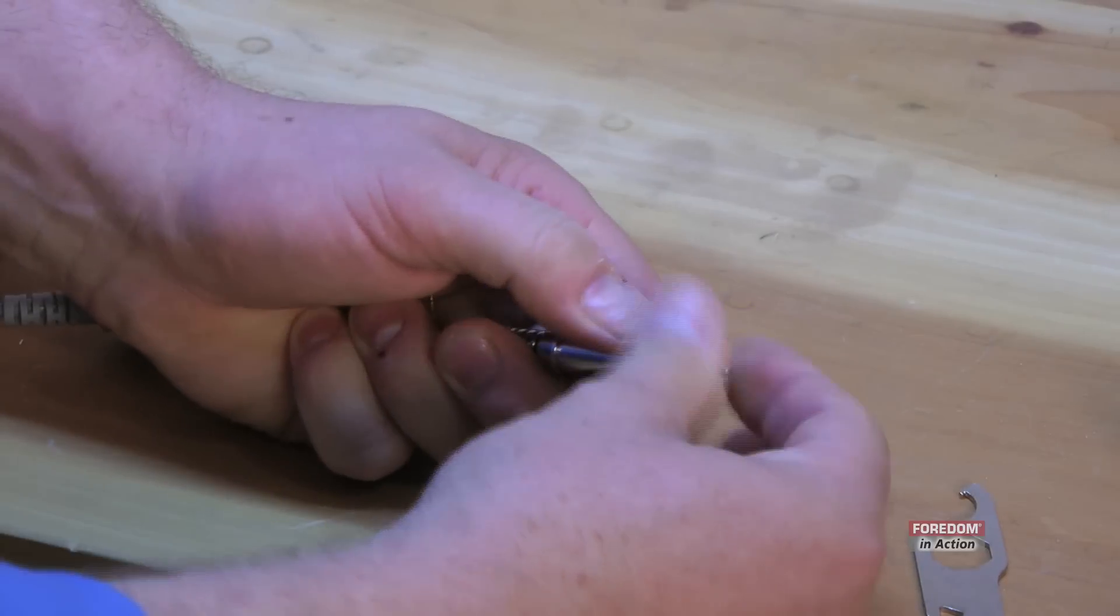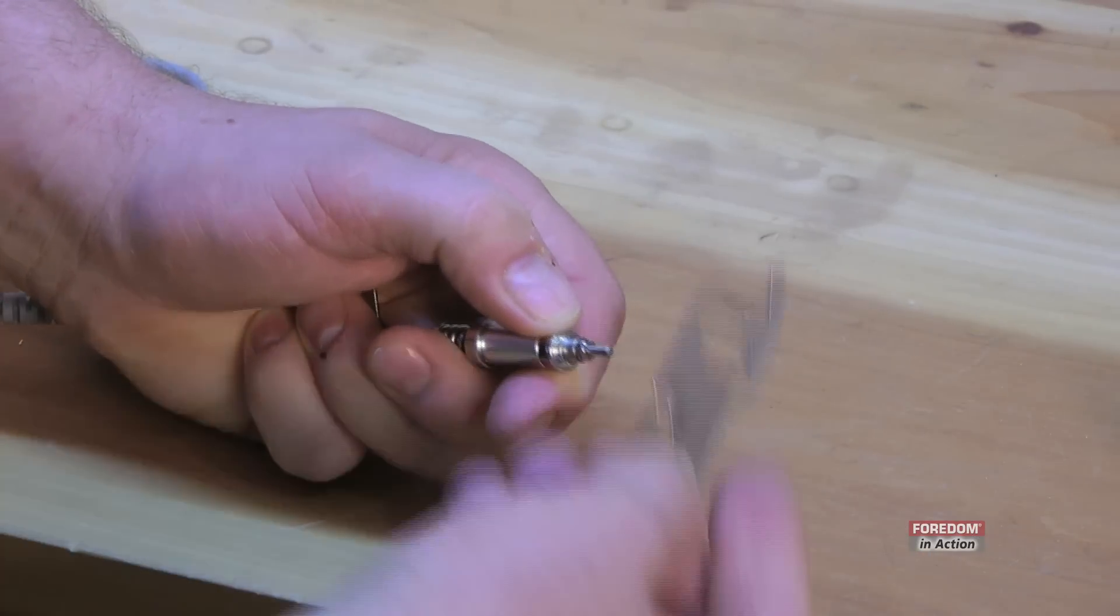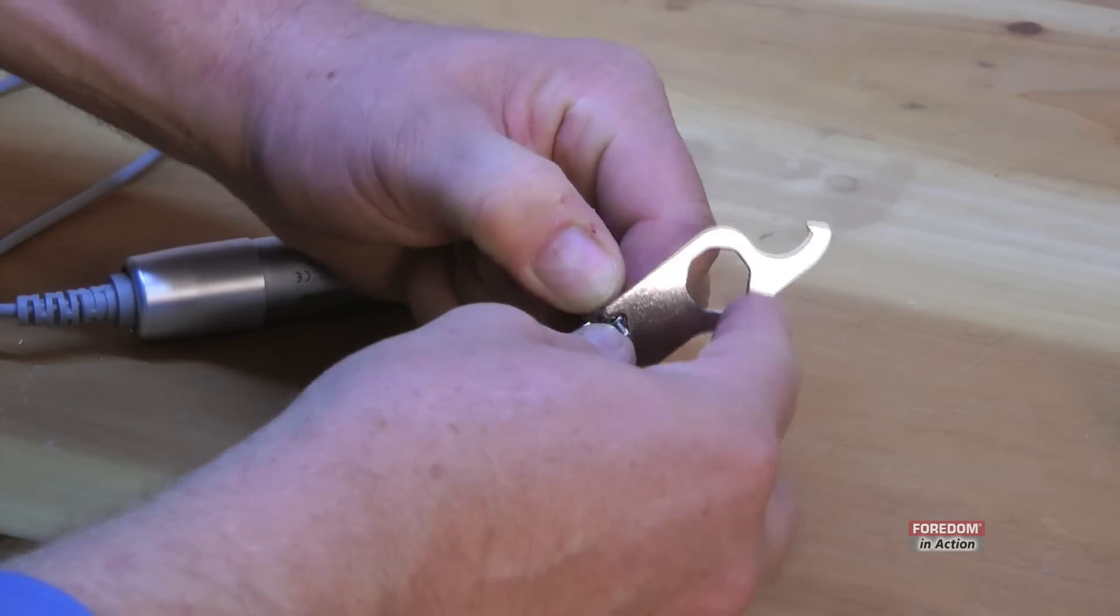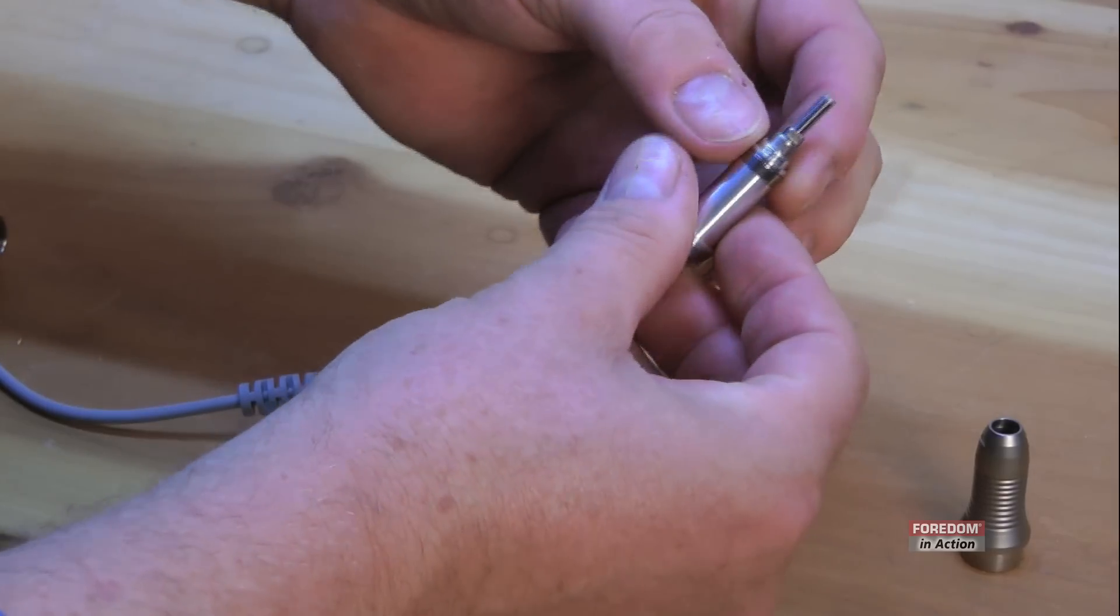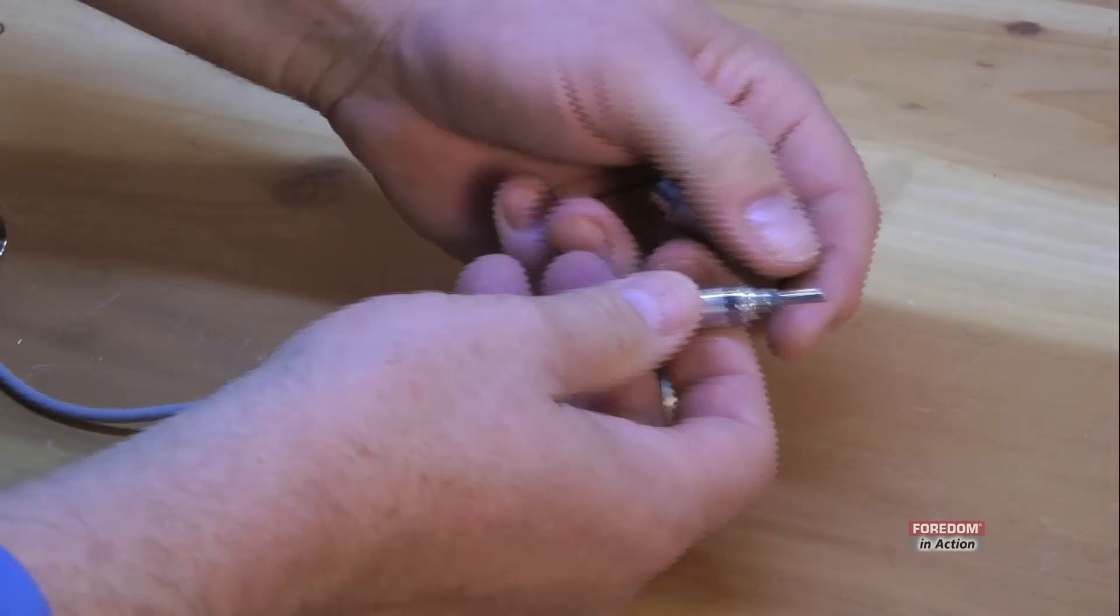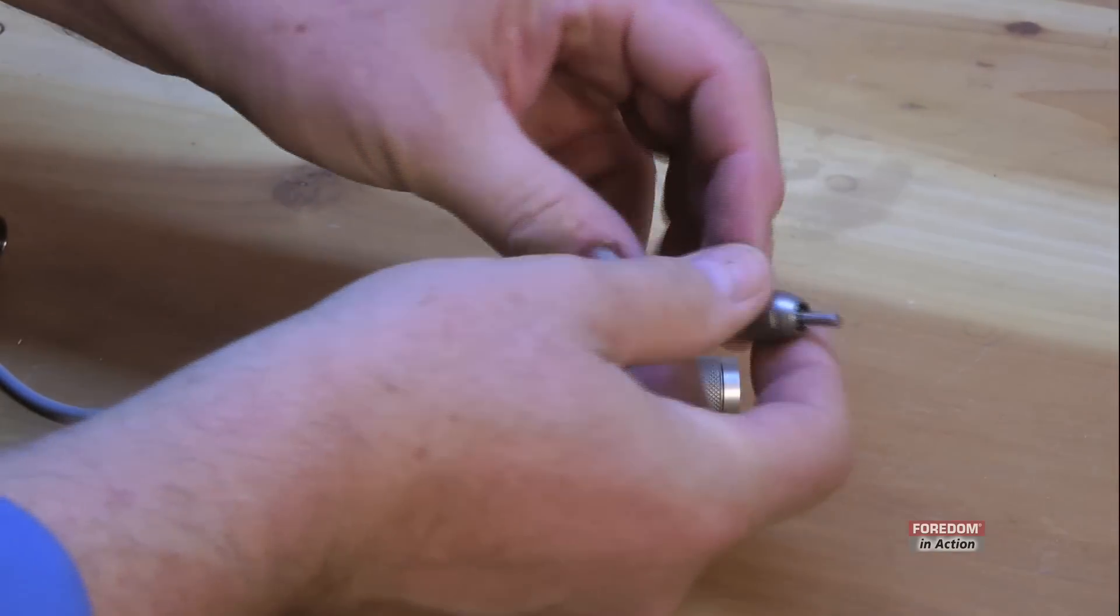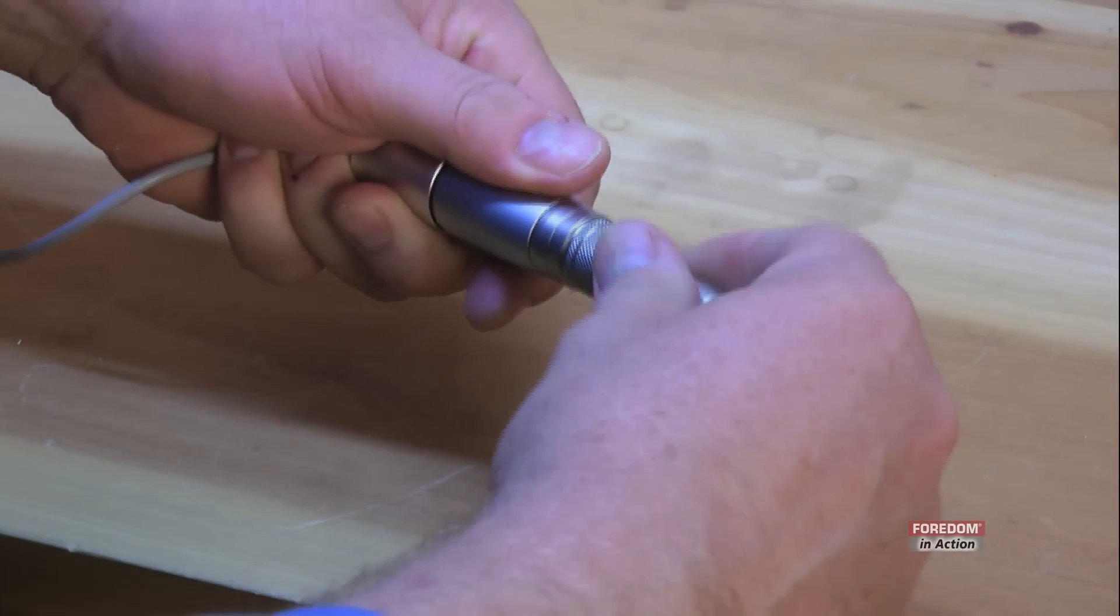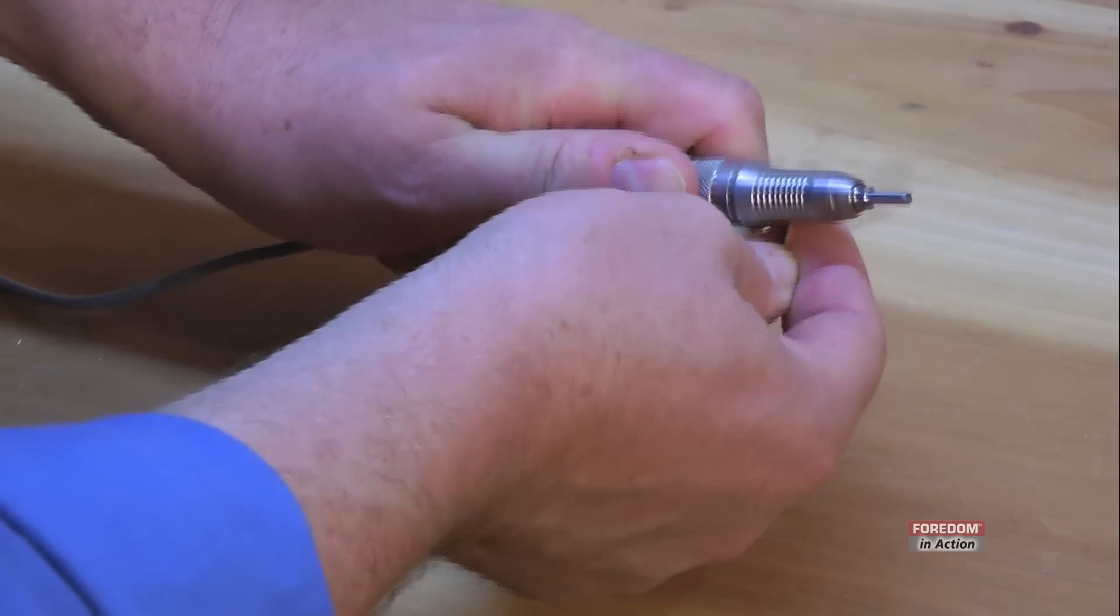Now when you put your new collet in, tighten it down. Okay, now you've got your unit here with your tightened collet. Put that in. Slip it in. Tighten it up.